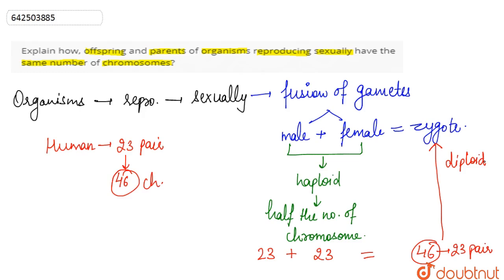In the case of the parents, both the male and female parent have 23 pairs of chromosomes. But when they produce gametes, each gamete consists of only half that number. When both halves combine, they form 46 chromosomes — 23 pairs — hence the progeny and the parent have the same number of chromosomes.